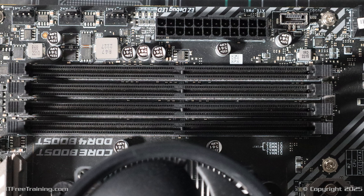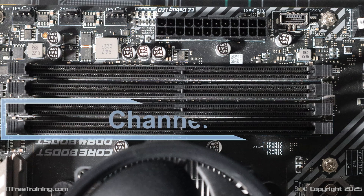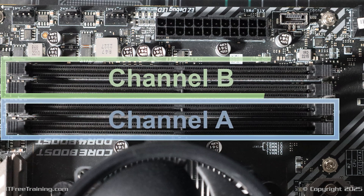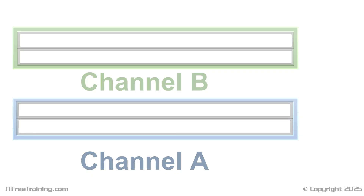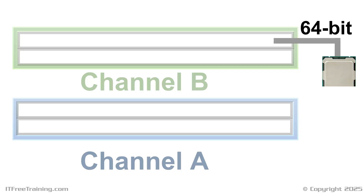On this motherboard, there are four memory slots. They are divided up into two channels, these being channel A and channel B. Each channel can transfer 64 bits at once. If you use two channels, then each channel can transfer 64 bits, making a total of 128 bits at the same time. On this motherboard, there are two channels and each channel has two slots attached to it.